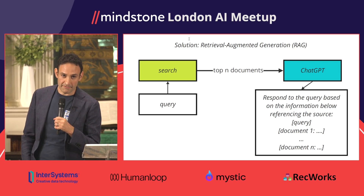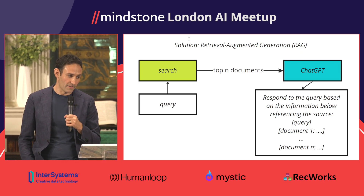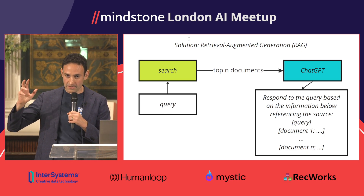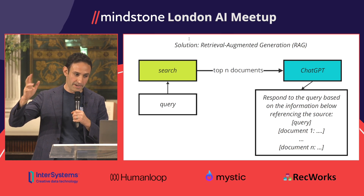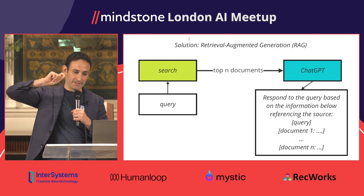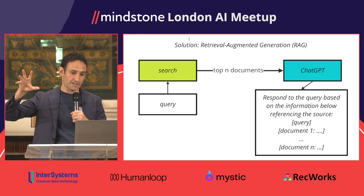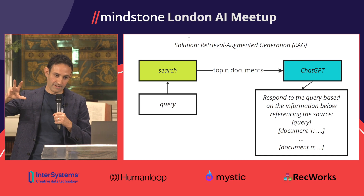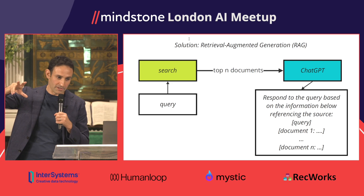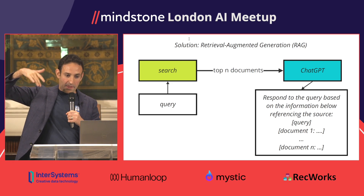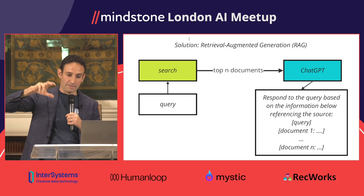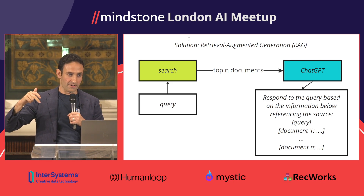Retrieval Augmented Generation, or RAG, is probably the most popular solution at the moment. The way it works: you have a query like 'how do I book a ride,' it goes through search, which retrieves relevant documents — however many you feel is needed. Those documents are inserted into the prompt of a large language model such as ChatGPT, together with a prompt along the lines of 'respond to this query using only the information below and reference which information you used in the answer.'